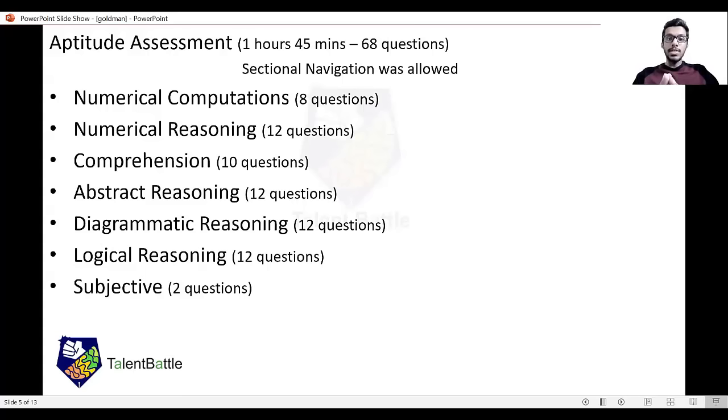There were 68 questions in seven sections, and you could navigate between the sections. The sections were: numerical computations with 8 questions, numerical reasoning with 12 questions, comprehension with 10 questions, abstract reasoning and diagrammatic reasoning with 12 questions each, logical reasoning with 12 questions, and two subjective questions. You may be hearing some of these terms for the first time, so let's check what questions were in each section.